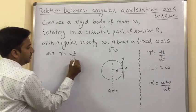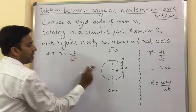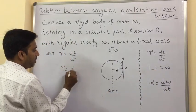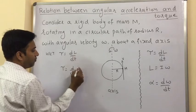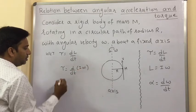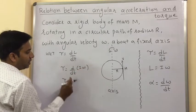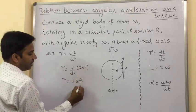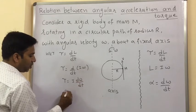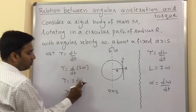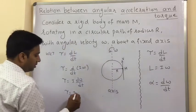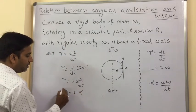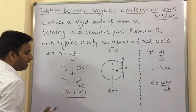We know that torque equals dL by dt. In place of L we write the formula L equals I-omega, therefore tau equals d by dt of I-omega. Since I is constant, we take it before differentiation: tau equals I times d-omega by dt. And d-omega by dt is nothing but alpha, so tau equals I-alpha.